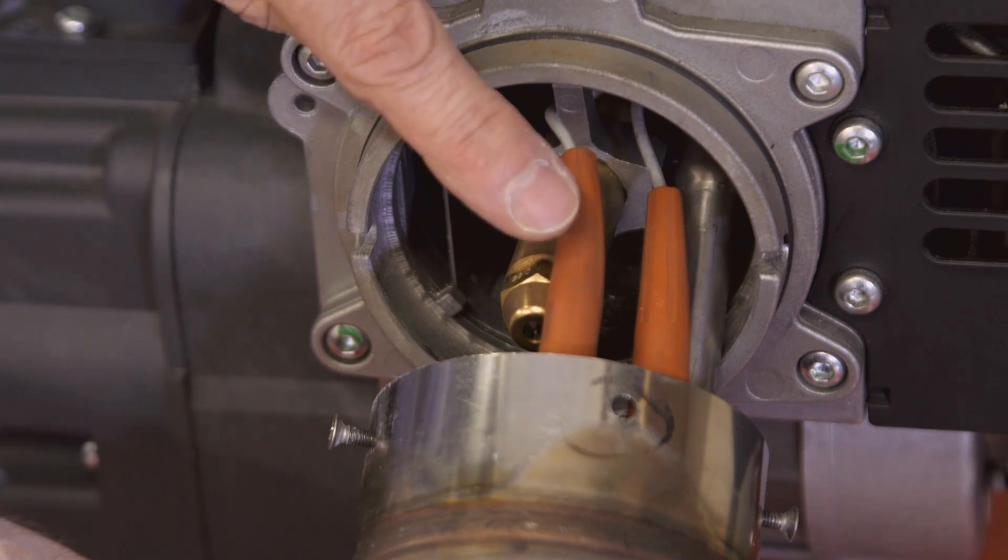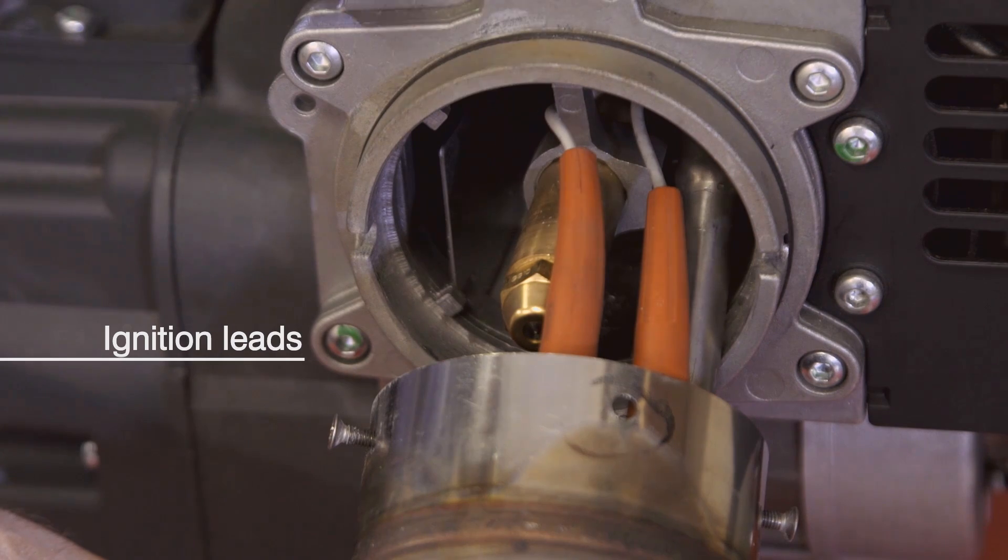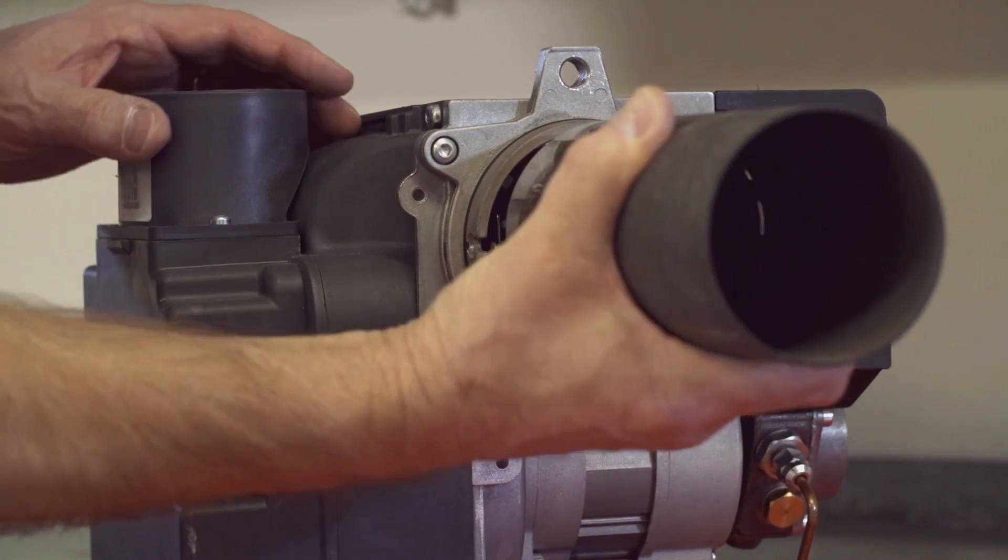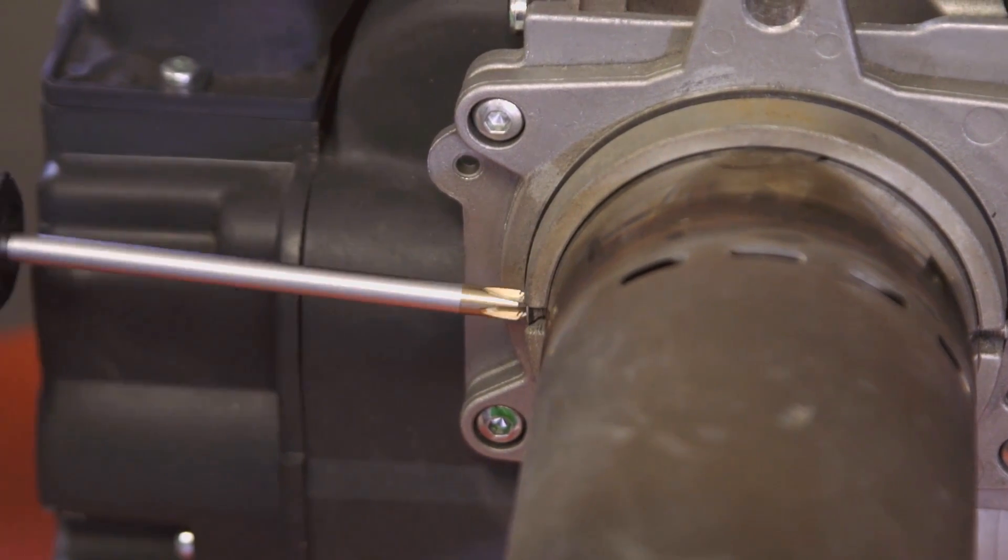Don't forget to disconnect the two ignition leads from the electrodes inside the head. To refit the combustion head just reverse this process connecting the electrodes first pushing the head into the burner body and tightening the screws.